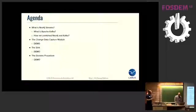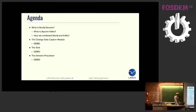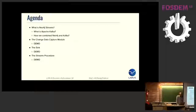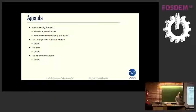Let's see the agenda. We will talk about the Neo4j Streams project, but first a brief introduction of what Apache Kafka is, and how we combine Neo4j and Kafka. Then we will talk about the three modules: the change data capture with a demo, the sync with a demo, and in the end the streams procedure. The demos are all in a Docker container, all the code is on GitHub, and all demos are on Apache Zeppelin.